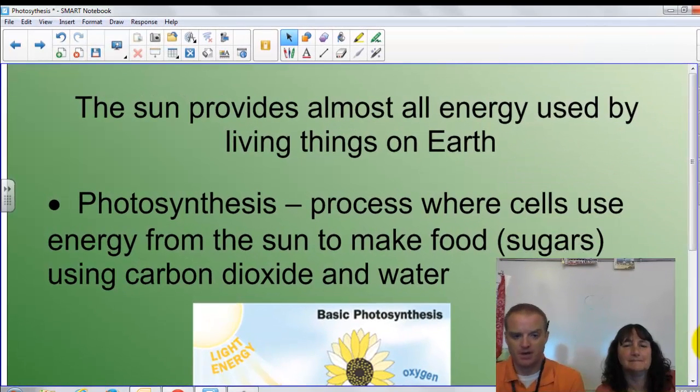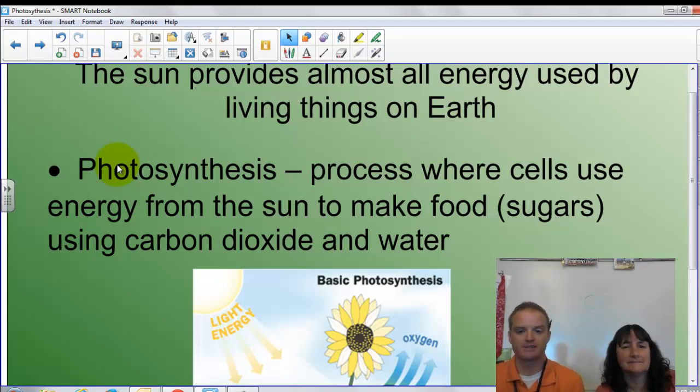And photosynthesis allows us, it comes from the sun. The sun provides almost all the energy used by living things on Earth. And photosynthesis, simply put, is a process where cells use energy from the sun to make food, to make sugars, simple sugars, using carbon dioxide and water.